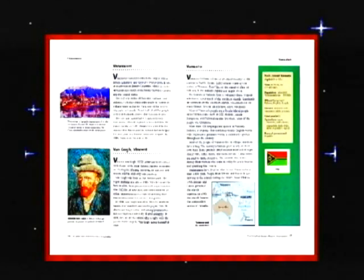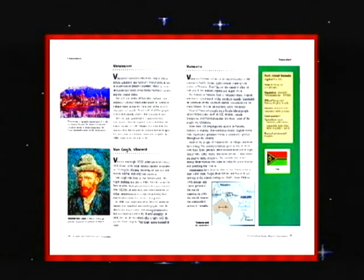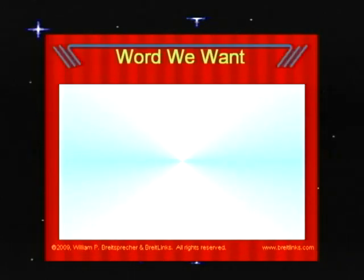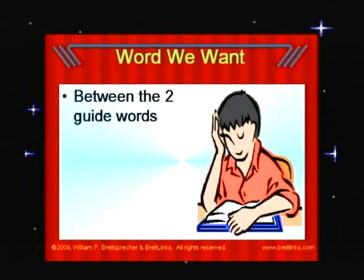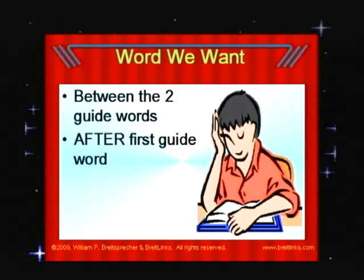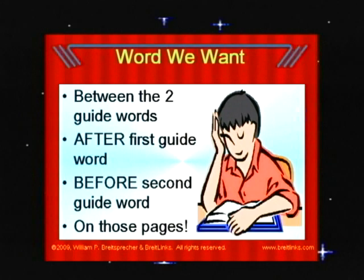Here's an example. We're looking at two pages. See the small guide word on the left and the small guide word on the right. The first guide word is the first item covered on the first page; the second guide word is the last item covered on the second page. The word we want has to be between the guide words — we just have to think about alphabetical order. It has to be after the first guide word and before the second guide word, so it has to be on one of those two pages.